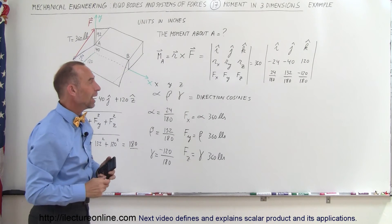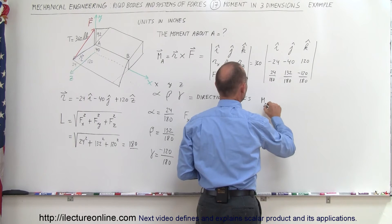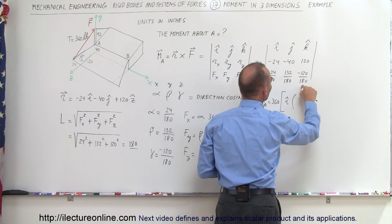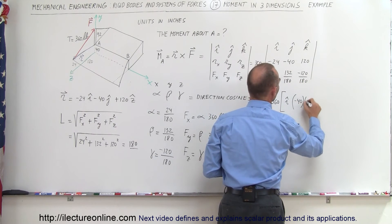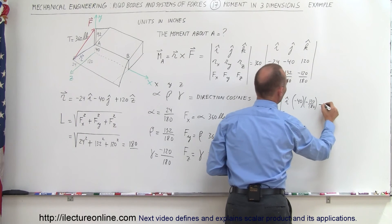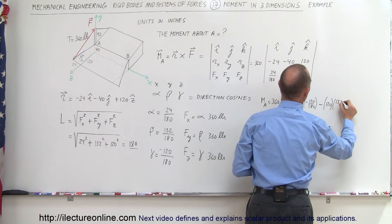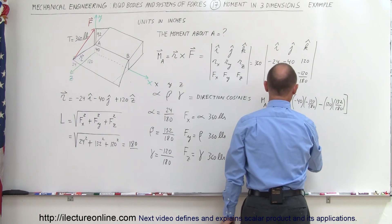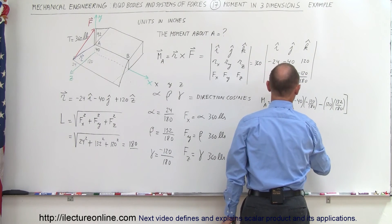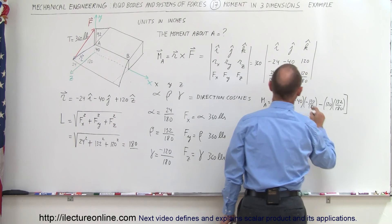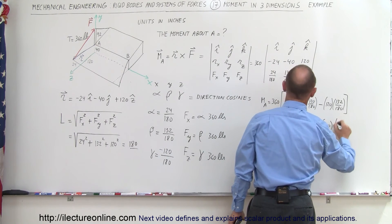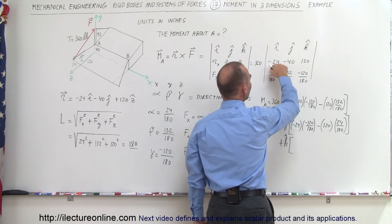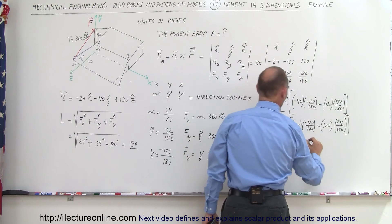Now we find the moment about point A. Expanding the cross product, the I component comes from minus 40 times minus 120 over 180, minus 120 times 132 over 180. The J component is negative of: minus 24 times minus 120 over 180, minus 120 times 24 over 180. The K component is plus: minus 24 times 132 over 180, minus minus 40 times 24 over 180.